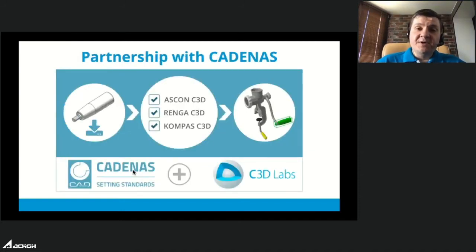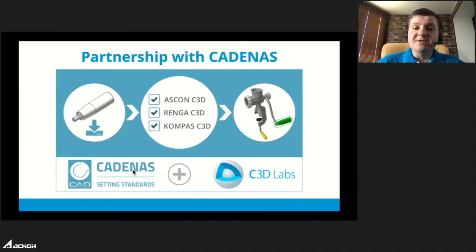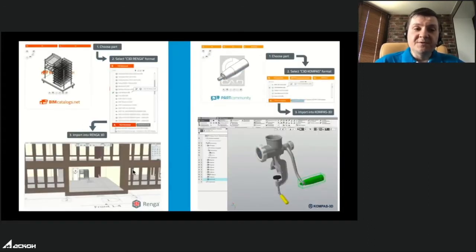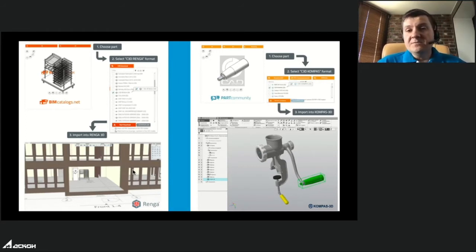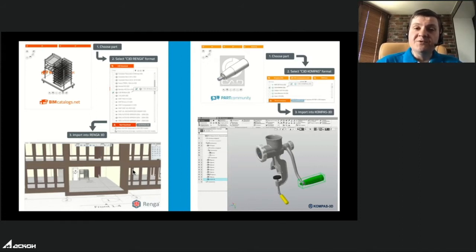A new partner is Cadenas from Germany, a very large and well-known provider of online 3D model catalogs for architectural and manufacturing fields. They now use our C3D Converter to output files in C3D file format. Users of their BIM catalog can select C3D file format and import data directly into their software, and similarly for the manufacturing part community catalog.